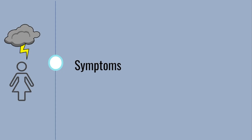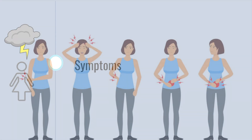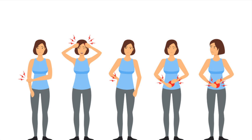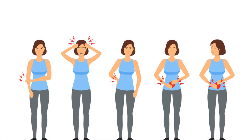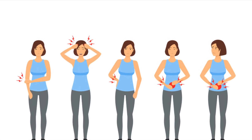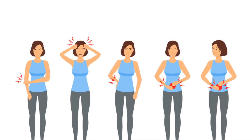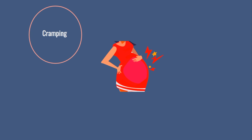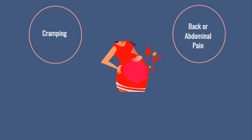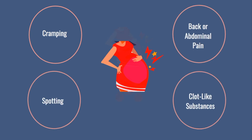Symptoms experienced during a miscarriage are subjective, as every female will have a different experience. Some miscarriages will be more or less painful than others. However, most women have reported cramping, back or abdominal pain, spotting, and passing clot-like substances.